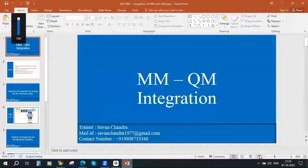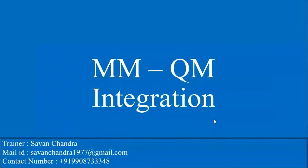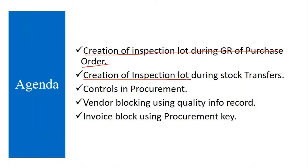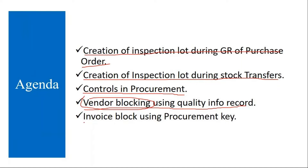This conference will now be recorded. The topics we are going to cover: creation of inspection lot during the GR of the purchase order, creation of inspection lot during stock transfers, controls in procurement, and the different types of controls we can have. Vendor blocking using quality info record — if quality side makes certain settings, you can block the vendor — and invoice block using procurement key. So you can block the invoice also. These are the integration points between MM and QM.